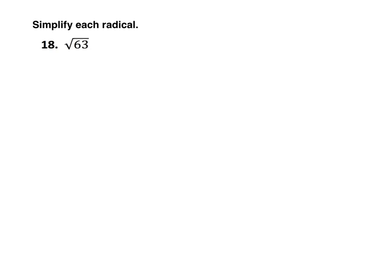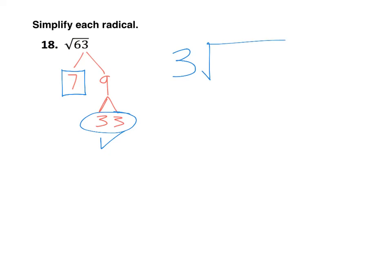For this next problem I'll use the factor tree method — pick whichever method makes most sense to you. I know 63 is 7 times 9, and 9 is 3 times 3, while 7 is prime. So the prime factorization is 7, 3, and 3. Circle your pairs: 3 and 3 form a pair. Anything that can't be paired gets a box — that's the 7. Take one number per pair out of the radical: the pair of 3s gives us a 3 outside. The unpaired 7 stays under the radical. So the square root of 63 simplifies to 3 radical 7.